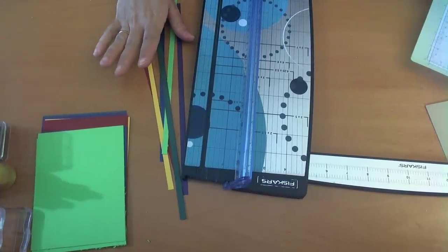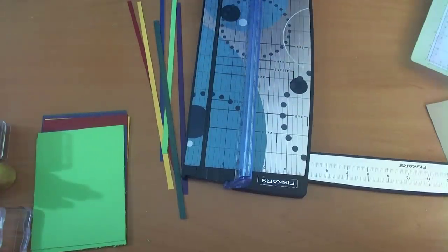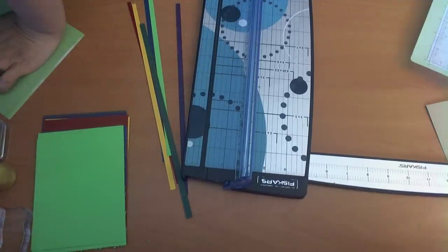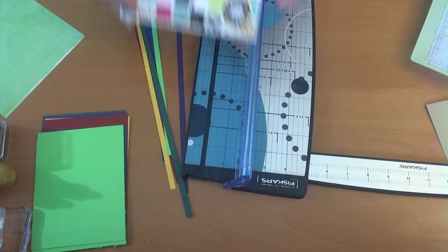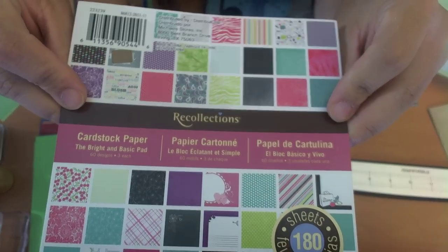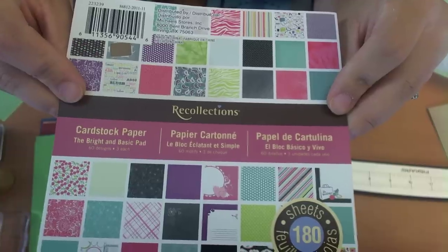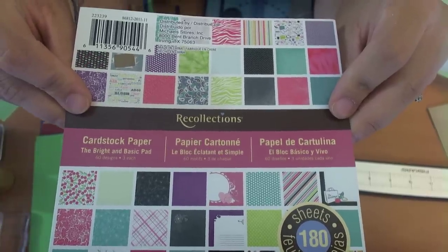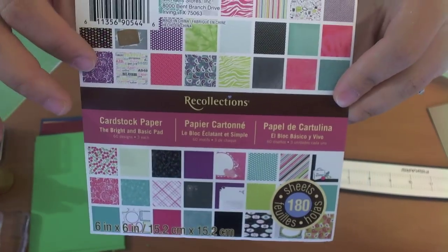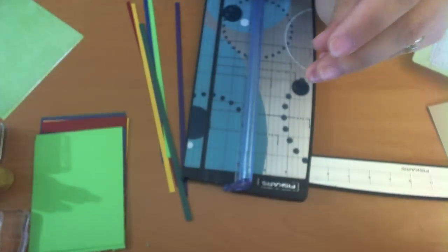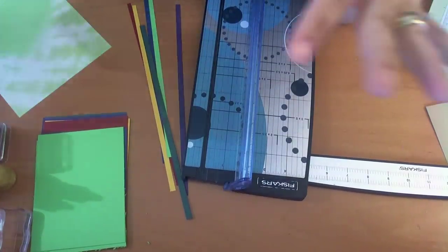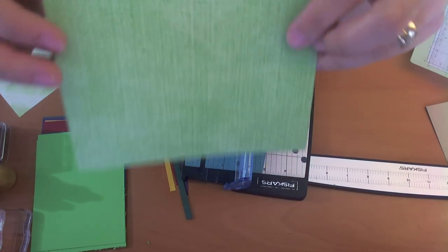When I paused the video I went and got some more paper. I wanted to give a little texture, and I had a package earlier from Recollections. This one is a Cardstock Star paper, the Bright and the Basic pad. Even though this is kind of girlish, I was able to find some colors in there that would apply to our project. And I do apologize for the noise, I do live in the projects and the bus stop is right in front of my building and I live to the front, so we're gonna get a lot of traffic noise.